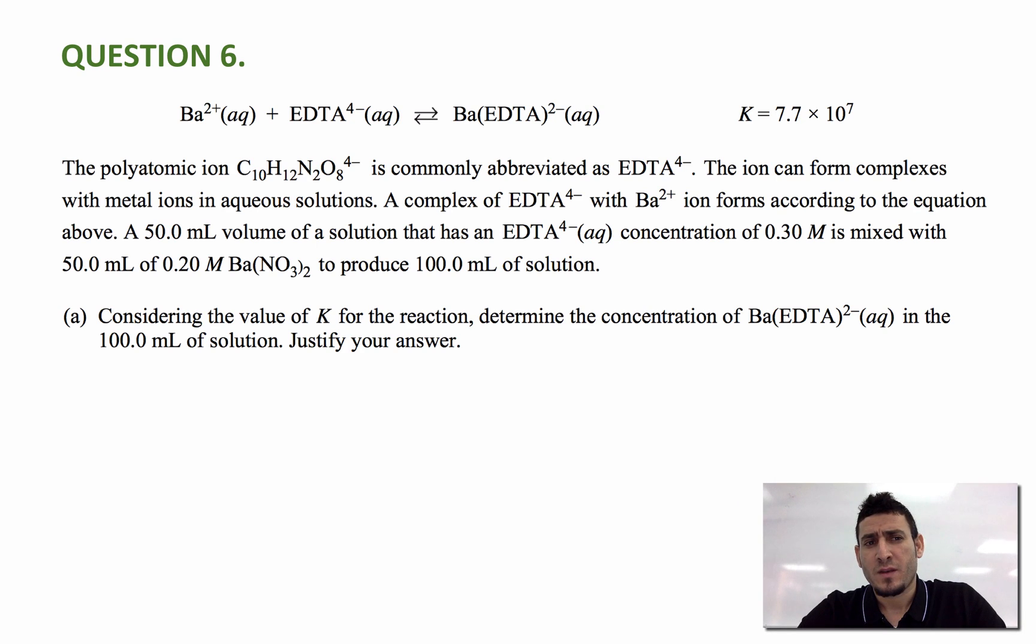Now the question says, the polyatomic ion C10H12N2O8 4- is commonly abbreviated as EDTA 4-. The ion can form complexes with metal ions in aqueous solutions. A complex of EDTA 4- with Ba 2+ ion forms according to the equation above.